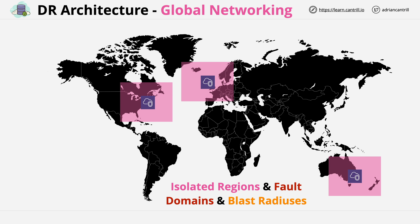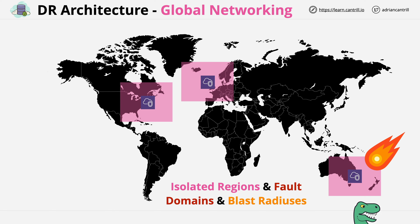Each region is isolated, separated, and independent. If a disaster strikes — for example, an asteroid hitting Australia — then only that one region would be impacted. The region in the UK together with US East 1 would be unaffected. At a global level though, we can use other AWS products to change this architecture — we can keep the benefits of separate fault domains and blast radiuses, but join them together from a service perspective.